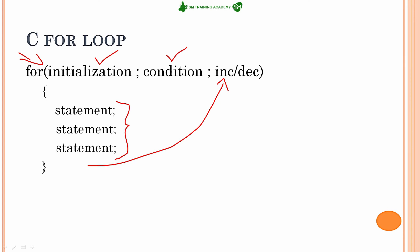If the condition is true again, the statements are executed a second time, then increment or decrement runs again and the condition is checked. This continues until the condition becomes false. The for loop is most widely used for generating delays in programs and for executing a block of code again and again until a certain condition is met. Let us demonstrate this with an example in Keil Microvision IDE.